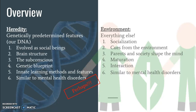Similarly but differently, environmental factors — aka nurture — also influence intelligence: things like socialization, cues from the environment that can affect memory, and parents and society who shape the mind. From conception onwards, the environment affects maturation and development, which are also influenced by different types of interaction. Intelligence could also be stunted by mental health disorders due to lack of social support, diet, lifestyle, and so on.